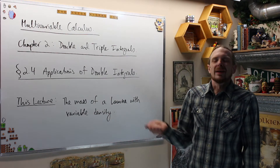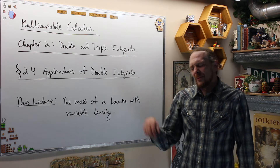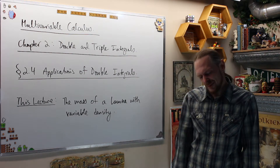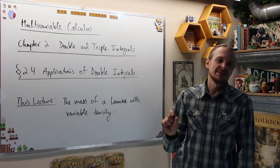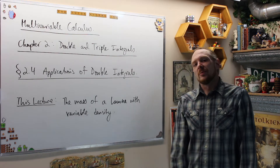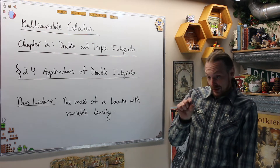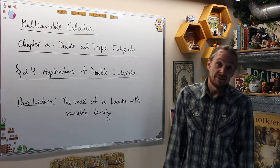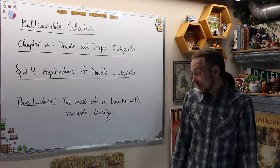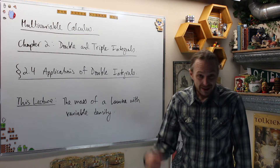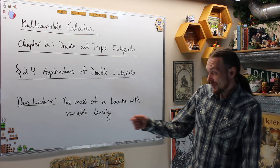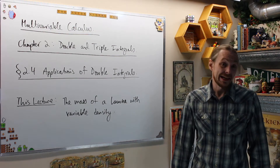If you've done this before in some calculus class, we had to say we're going to assume that the density is constant across a lamina, so it doesn't vary. But we know that in the real world the sheet of metal or whatever is probably not going to have the same density all the way across because things aren't perfect. So we want a more realistic version — we're going to look at the mass of a lamina which now has a varying density.